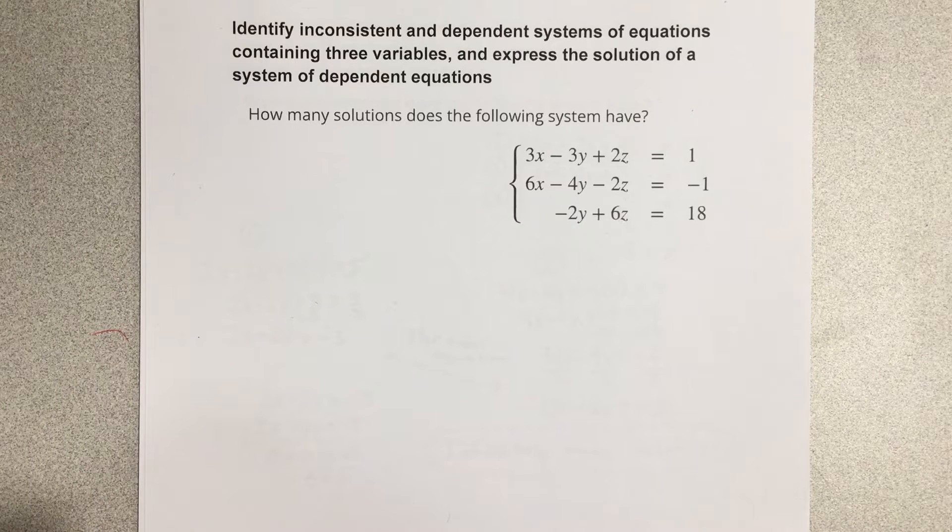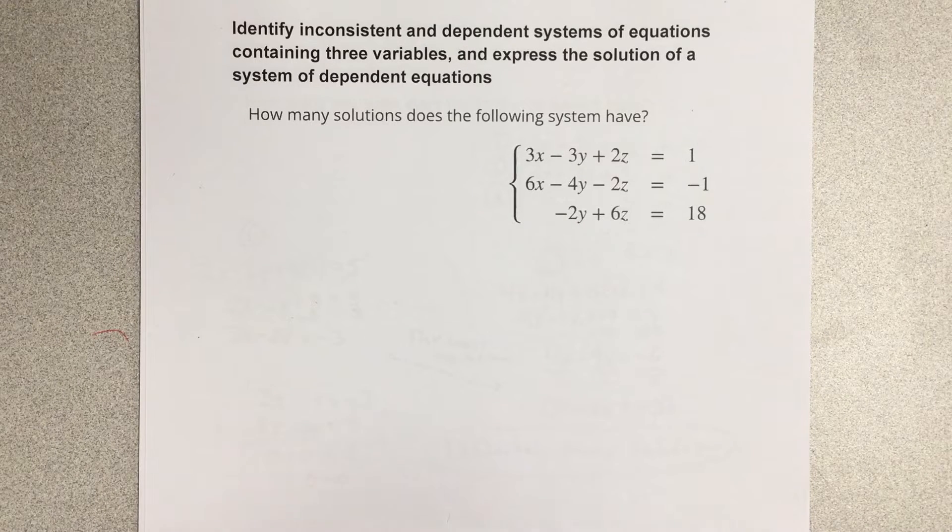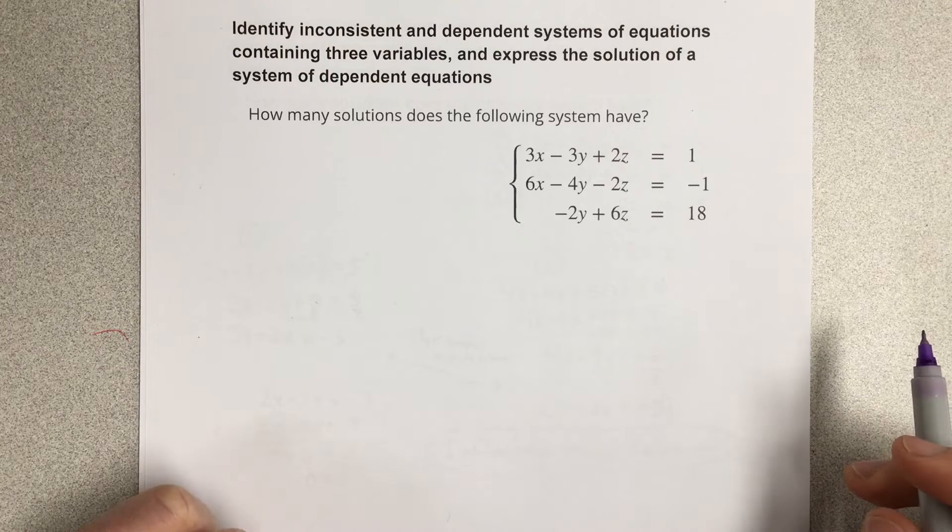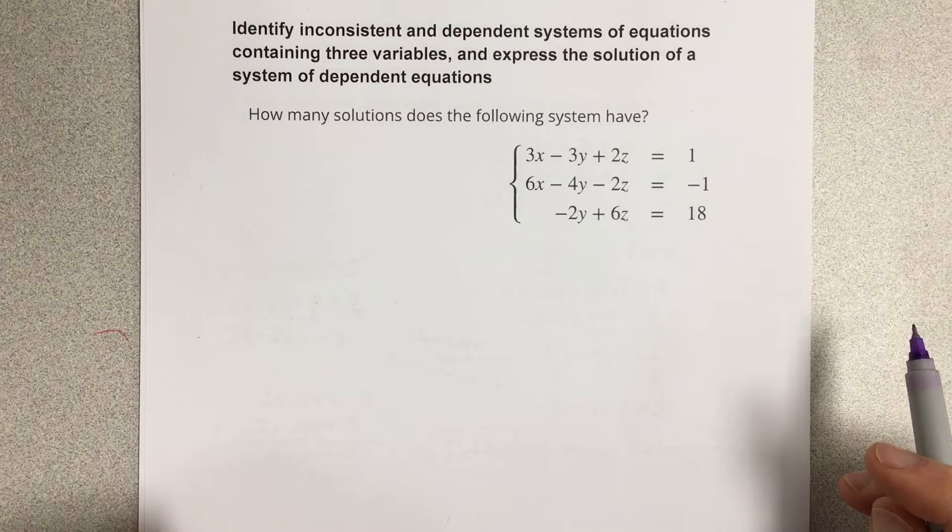In this video, we're going to identify inconsistent and dependent systems of equations containing three variables. Express the solution of a system of dependent equations. How many solutions does the following system have?